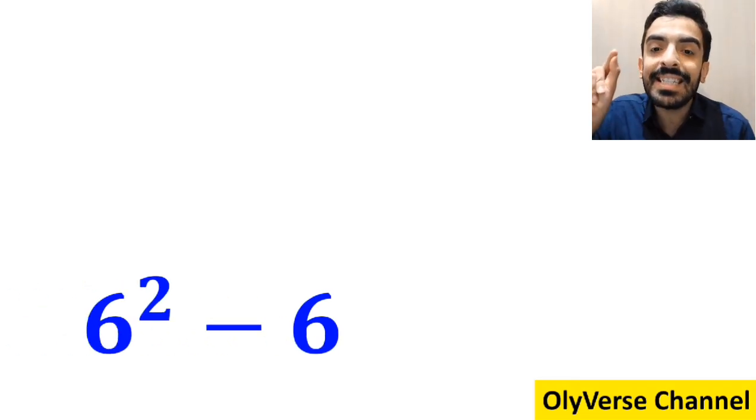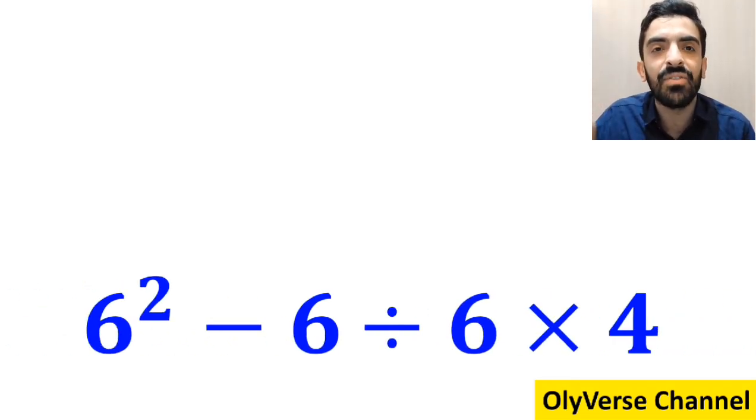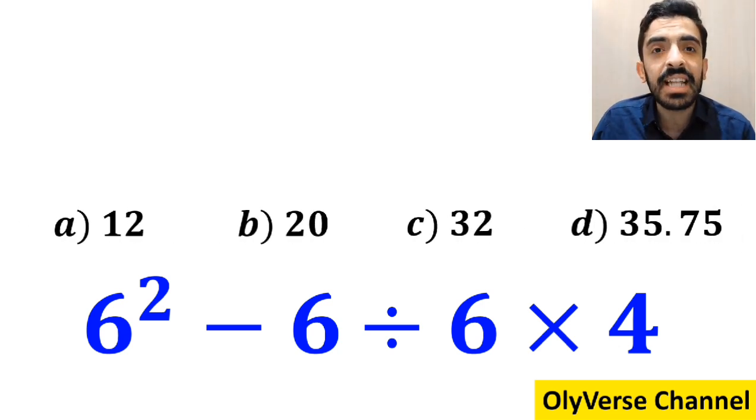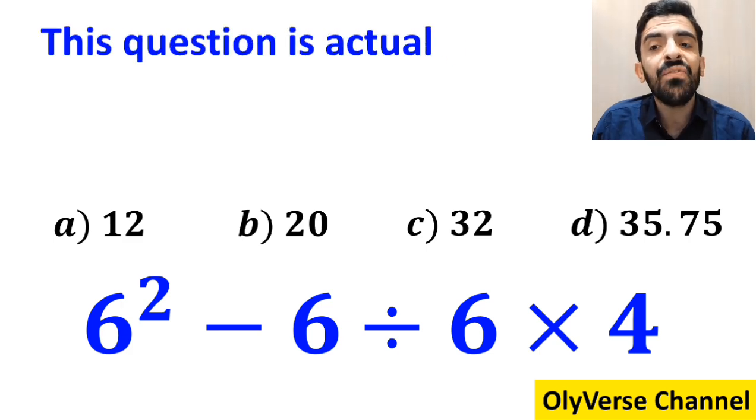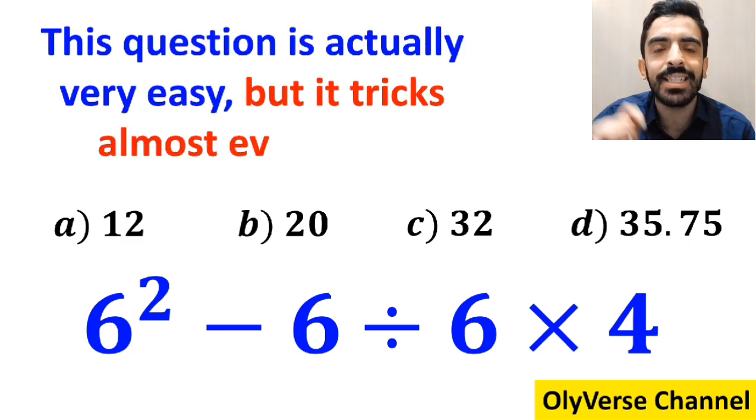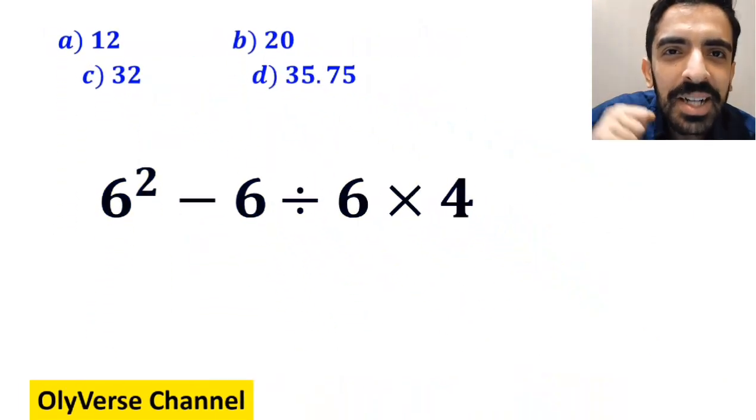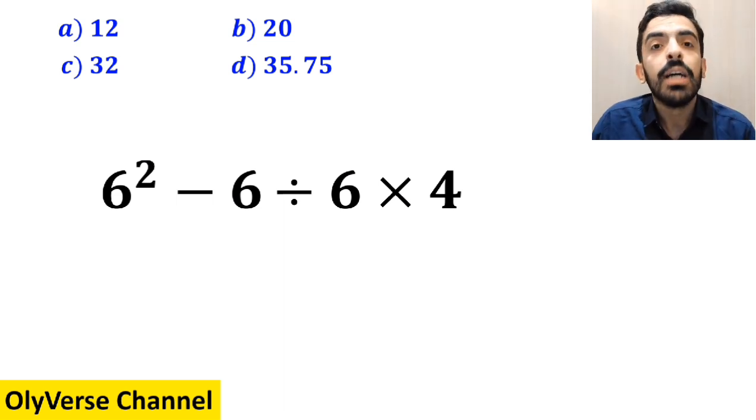What is the value of the expression 6 squared minus 6 divided by 6 times 4? Which option do you think is the correct answer? This expression is actually very easy, but it tricks almost everyone. Let's break it down and solve it together.